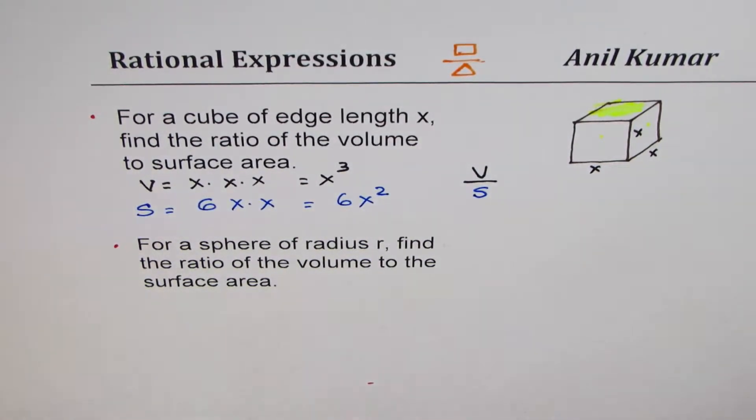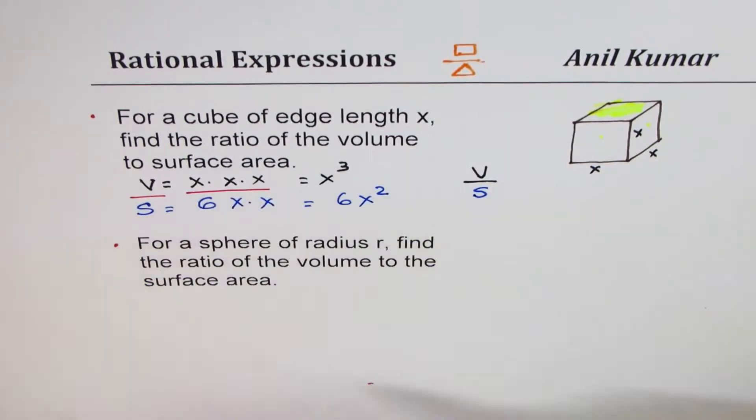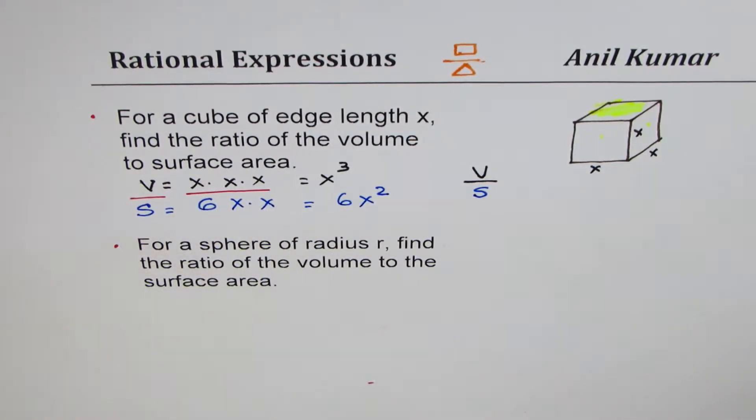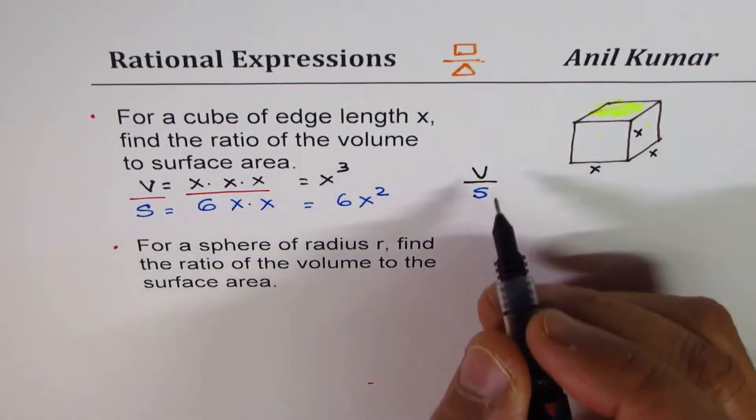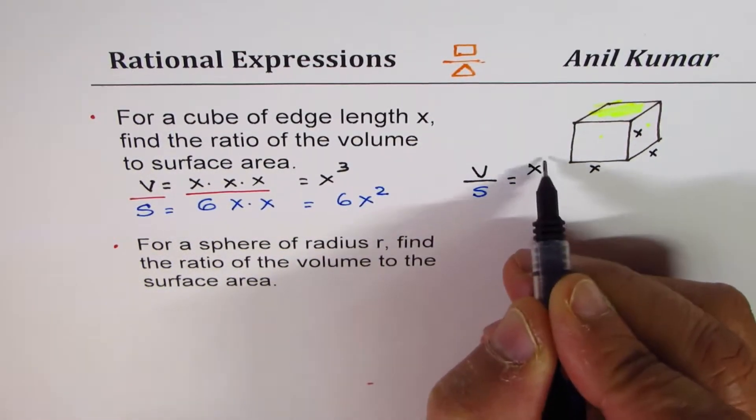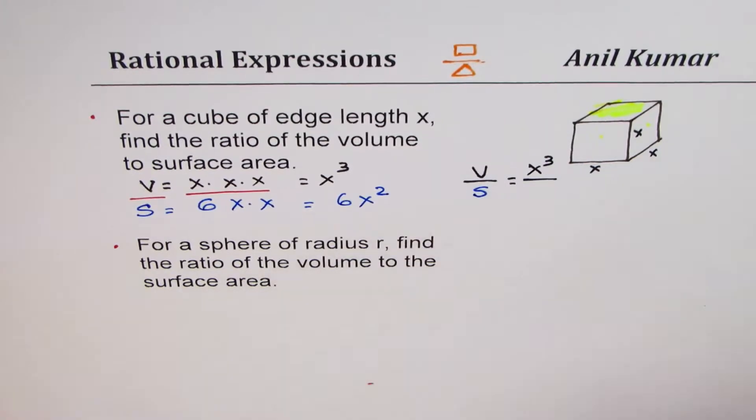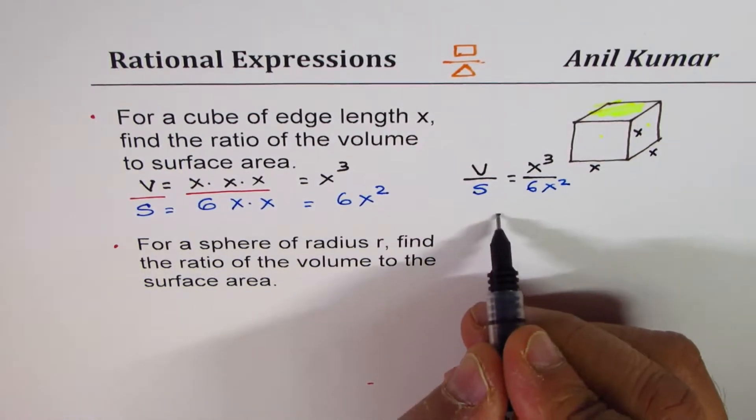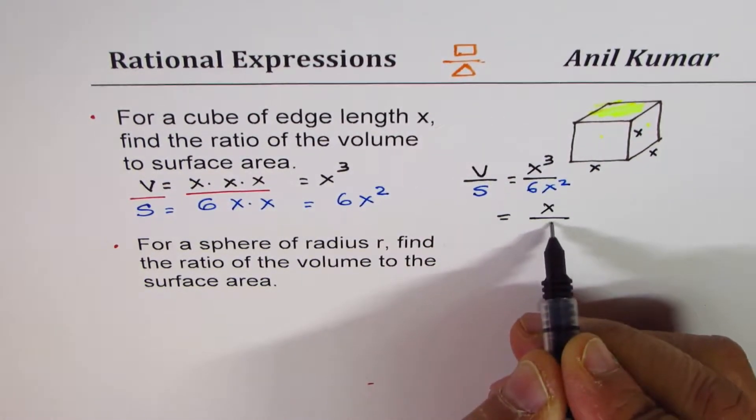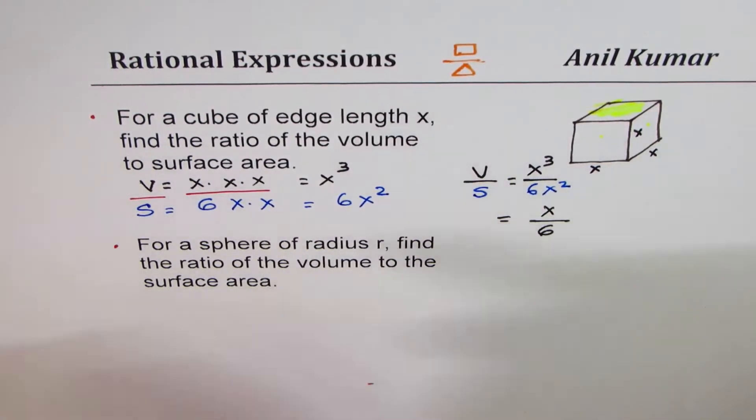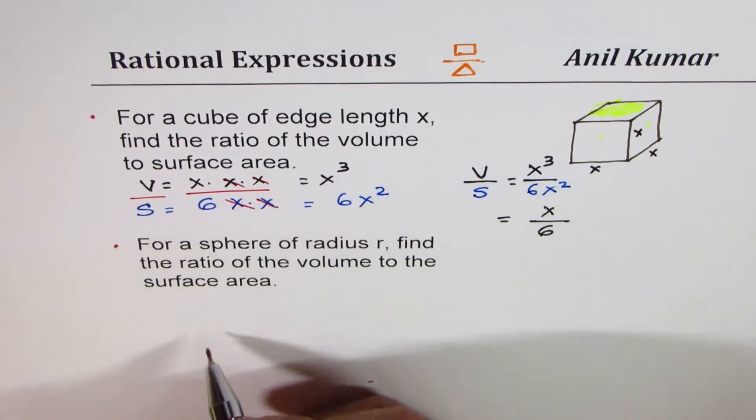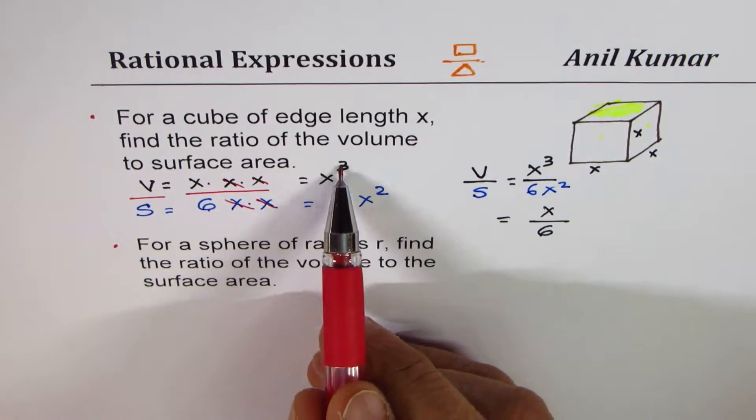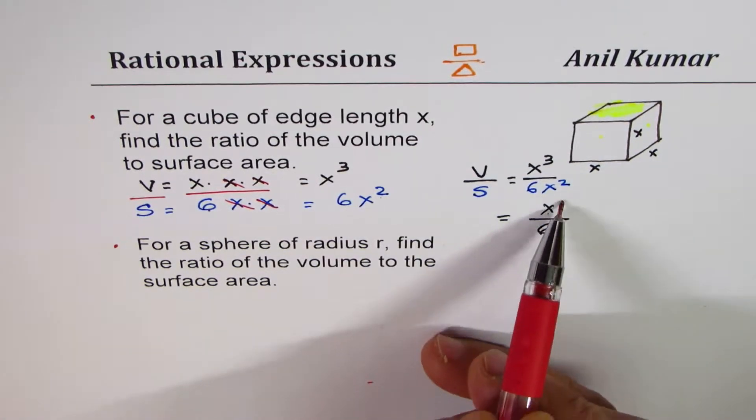So we are interested in this ratio, this divided by that. Two of the x's will cancel, so we'll have x over 6 as the answer. Let's do it. We have volume as x³, surface area as 6x², and when you simplify this you get x/6. Two of the axes are common, they get cancelled, you're left with x/6. If you know exponents, 3 minus 2 is 1, so you have x to the power 1 which is x, and there's 6 in the denominator.